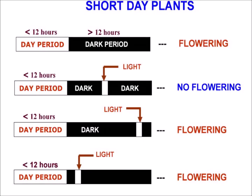In short day plants, the dark period is critical and must be continuous. If this dark period is interrupted with a brief exposure of red light (660 to 665 nanometer wavelength), the short day plant will not flower. Maximum inhibition of flowering with red light occurs at about the middle of the critical dark period. However, the inhibitory effect of red light can be overcome by a subsequent exposure with far red light (730 to 735 nanometer wavelength).